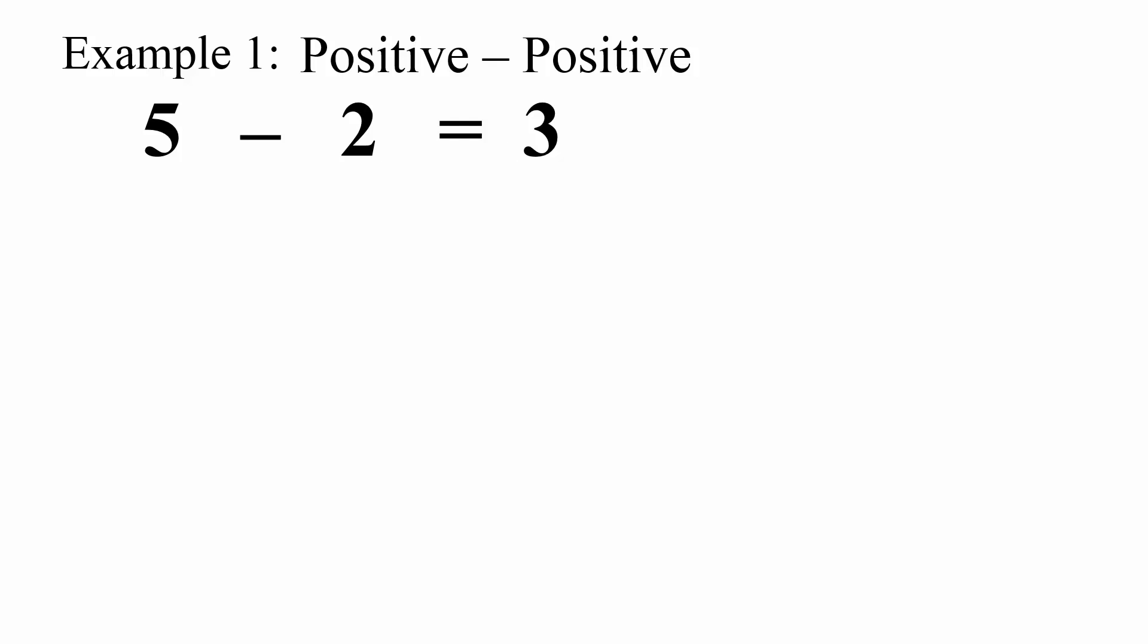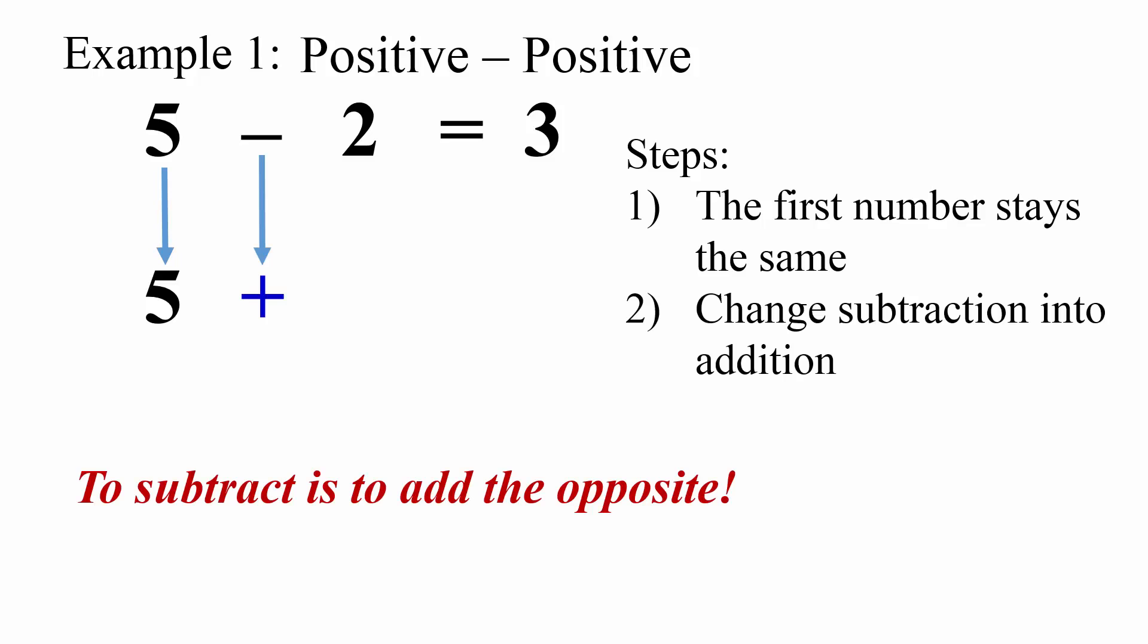Example 1: 5 subtract 2 equals 3. The first number stays the same. Change subtraction into addition. Change the second number to its opposite.